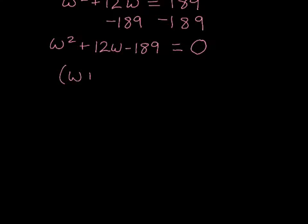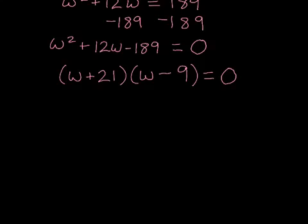So we will have w + 21 times w minus 9. That's equal to 0. And if you double check the arithmetic there, you'll find that again, 21 times negative 9 will multiply to negative 189 and add up to positive 12.